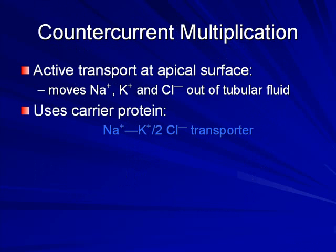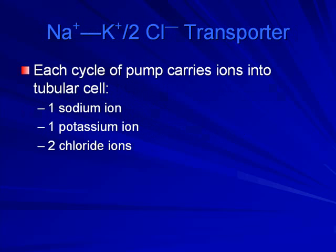Counter-current multiplication uses active transporters on apical surfaces to move sodium, potassium, and chloride out of tubular fluid, using carrier proteins to move sodium and potassium across concentration gradients. By using this pump — which requires energy — you can achieve a higher concentration of sodium wherever needed to attract more fluid for reabsorption. If you need to excrete more, less sodium is pumped, more sodium is retained in the serum, and more fluid is retained in the vascular system — depending on where volume is needed.